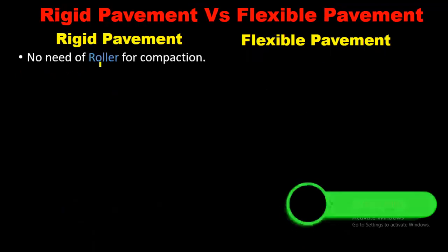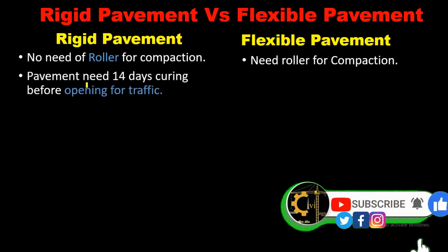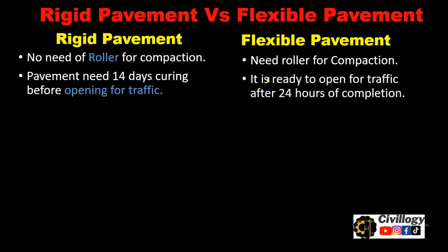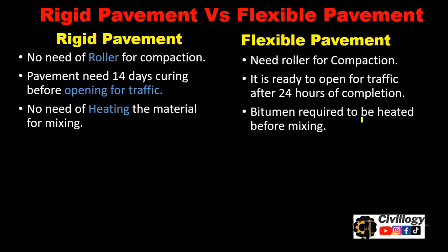In rigid pavement there is no need for roller compaction, whereas flexible pavement needs a roller for compaction. Rigid pavement needs 14 days of curing before opening for traffic, whereas flexible pavement is ready to open after 24 hours of completion. There is no need to heat the material for mixing in rigid pavement, whereas bitumen needs to be heated before mixing in flexible pavement.